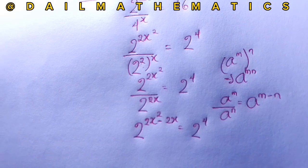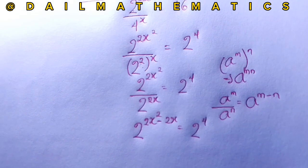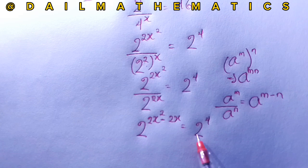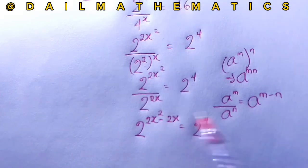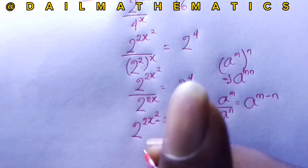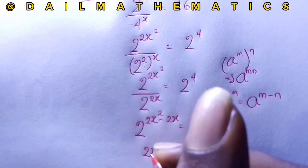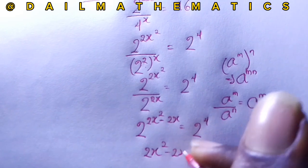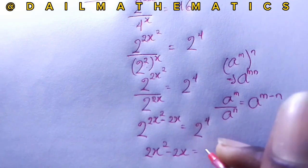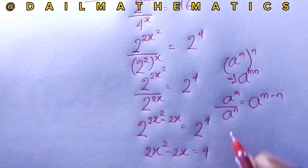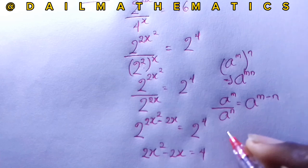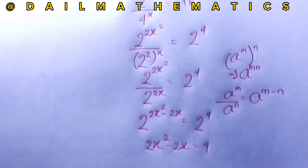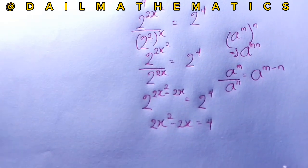Since the bases are both 2, we equate the powers, giving us: 2x squared minus 2x equals 4.